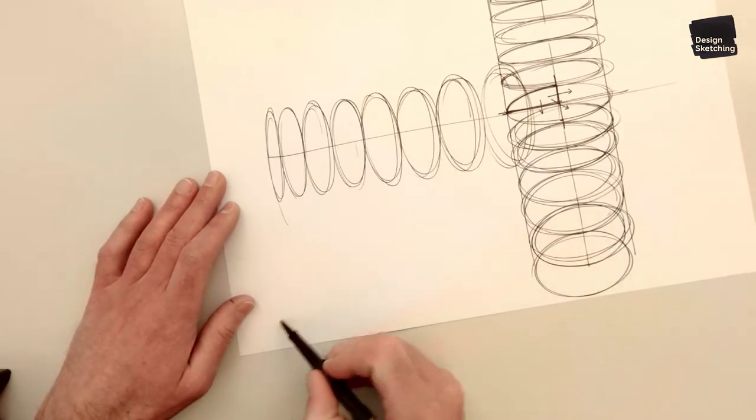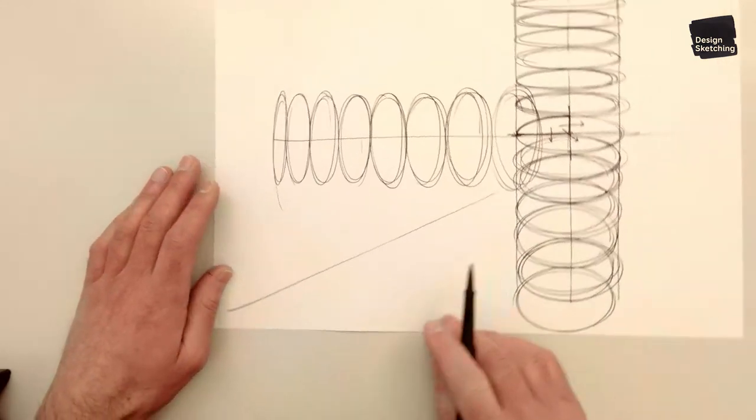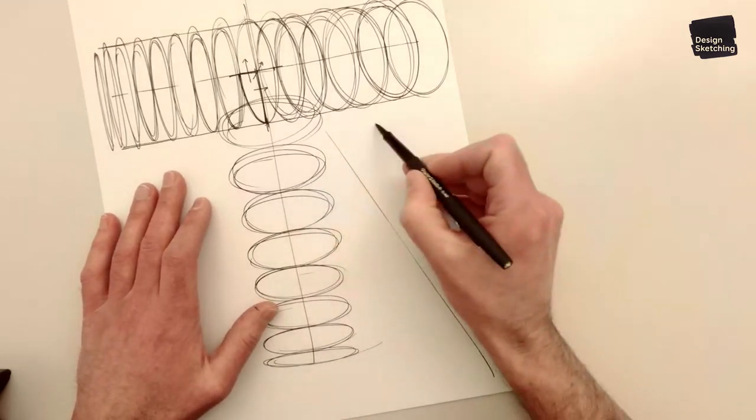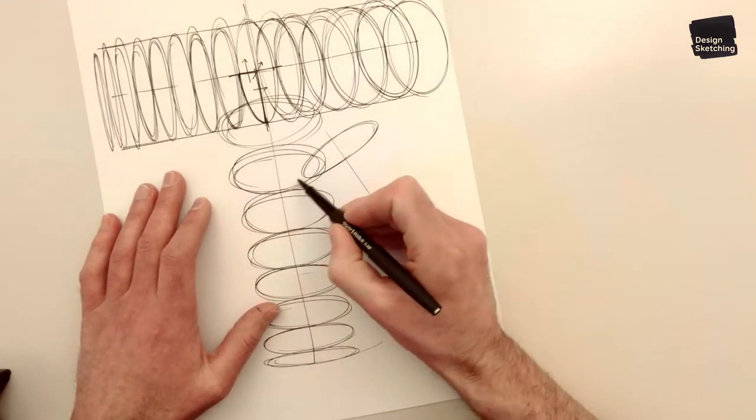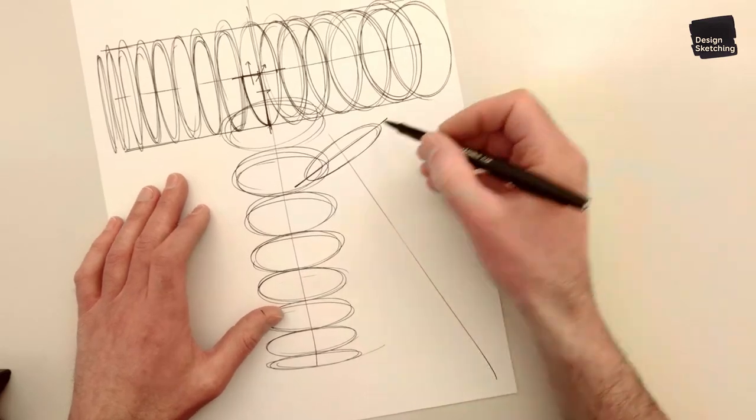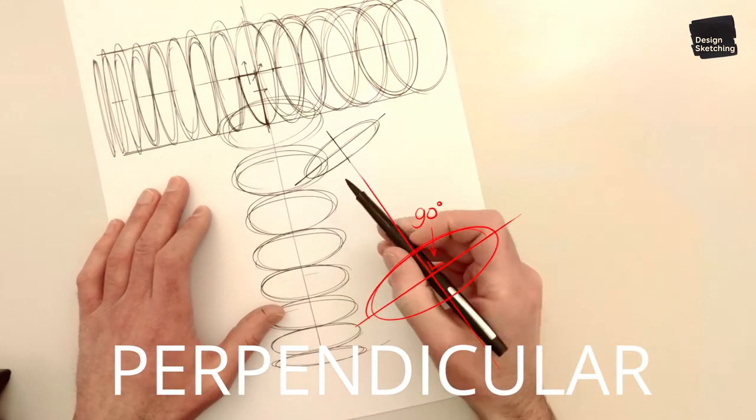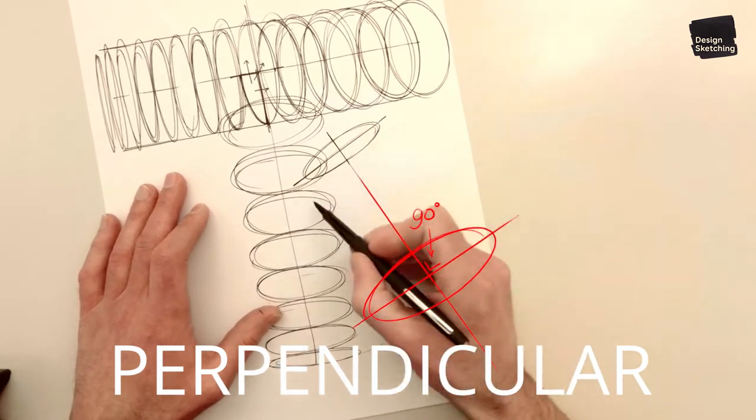And you can do this in any direction. So just draw a line, rotate the page in a more comfortable position. And make sure that the ellipse is always perpendicular to this axis here, to the center line.